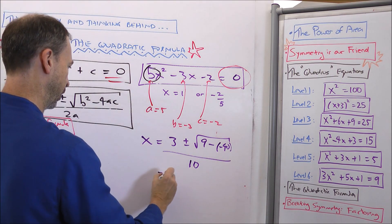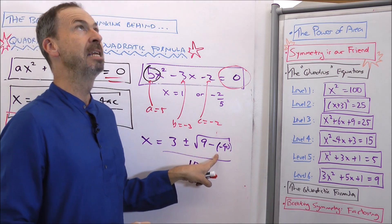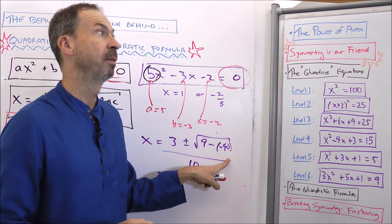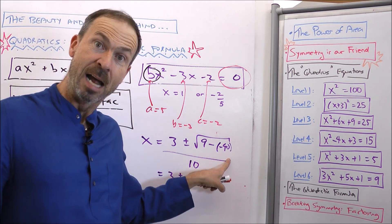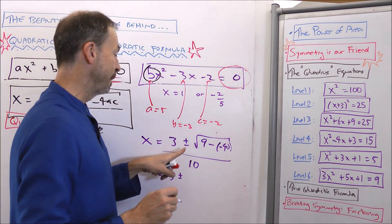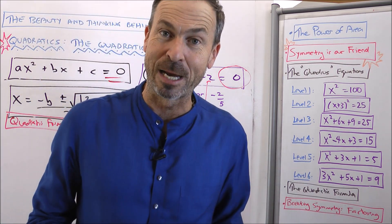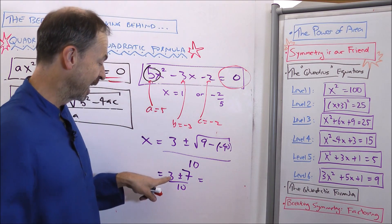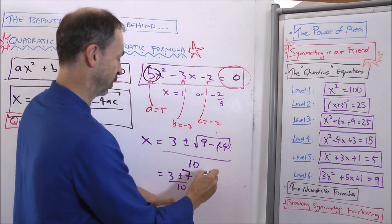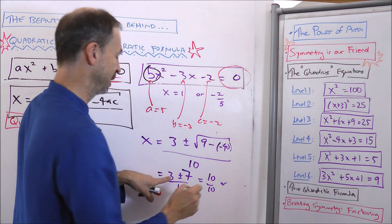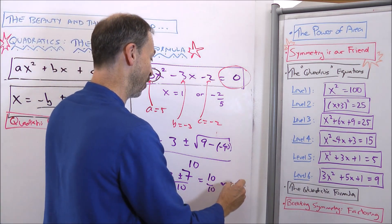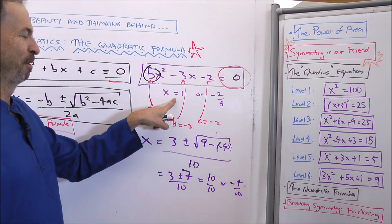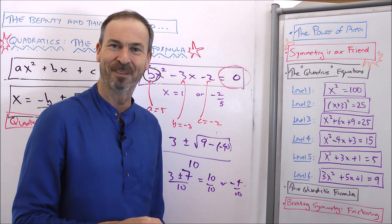So that is equal to 3 plus or minus 9 minus negative 40. 9 plus 40, 49. 3 plus minus the square root of 49. 3 plus or minus 7 over 10. So that actually gives me 3 plus 7 over 10, which is 10 over 10. Or it gives me 3 minus 7 over 10, which is negative 4 over 10, which is what we had before. 1 or negative 2 fifths. Beautiful.